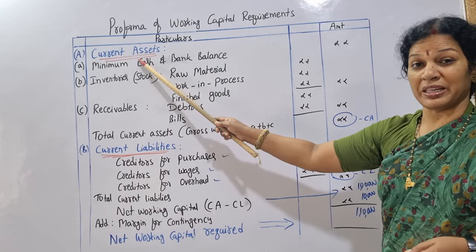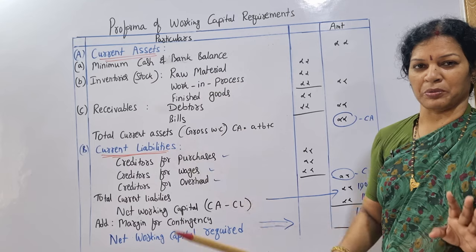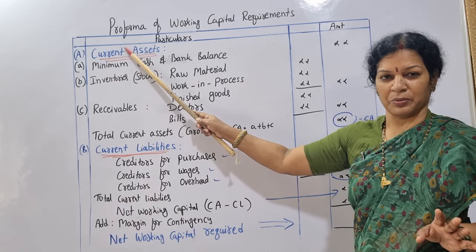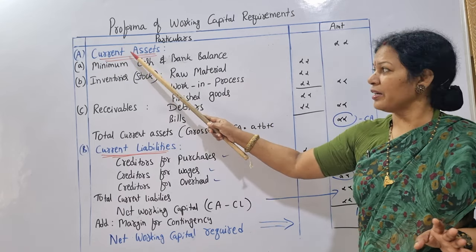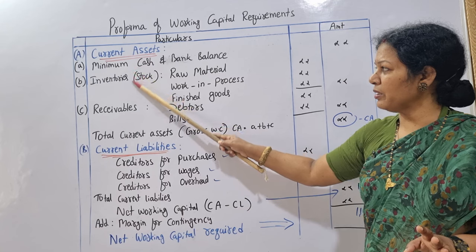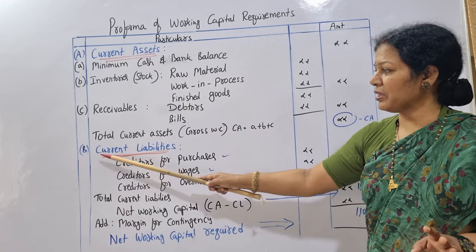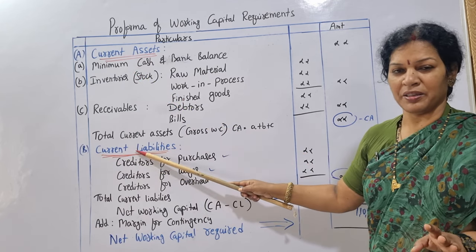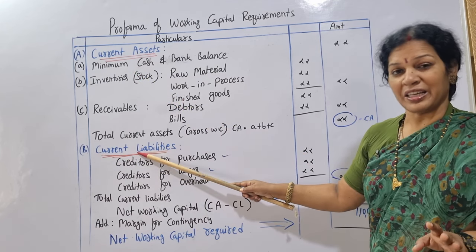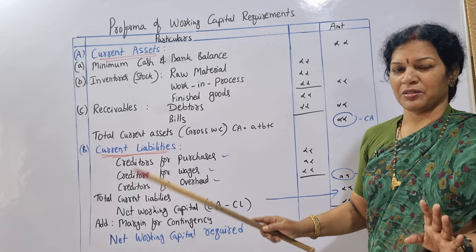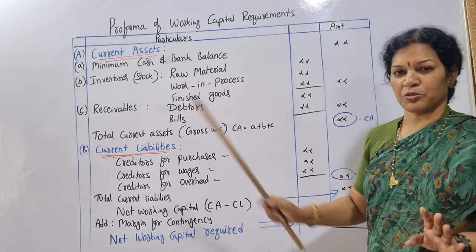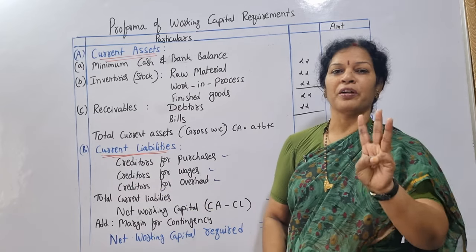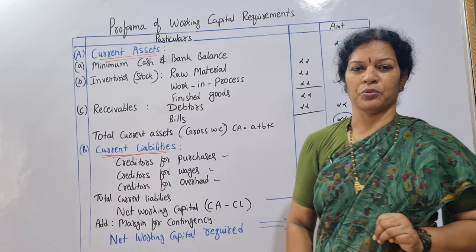We need the current assets. The current assets will be capital letter A, and we will look at B, capital letter B. Now there are current liabilities. The current assets focus on three points.